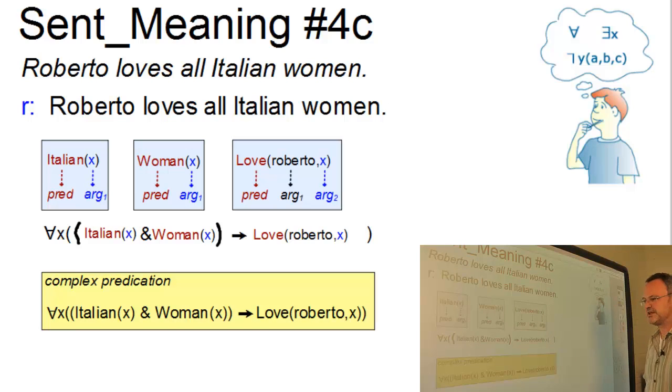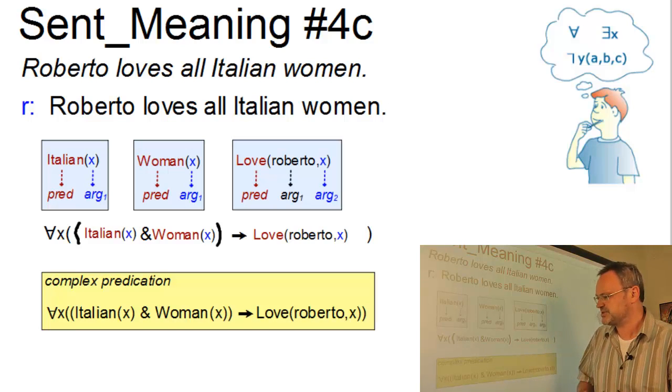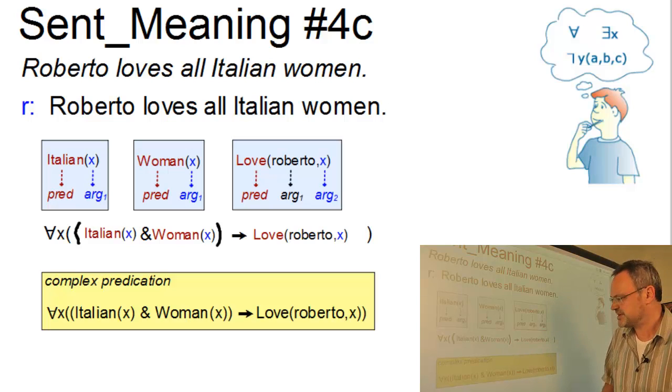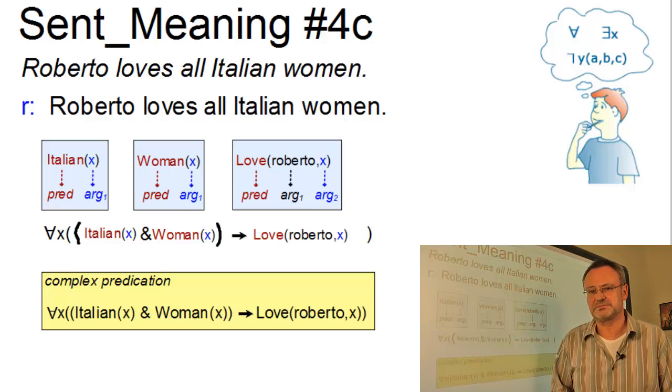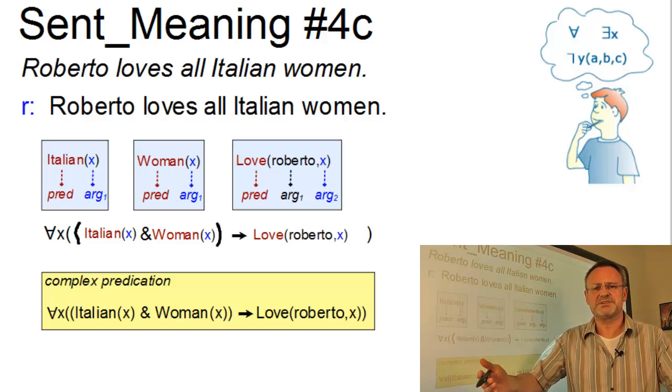Well, and this is the result. For all elements x it holds, if x is Italian and x is a woman, then Roberto loves x. Simple, isn't it?